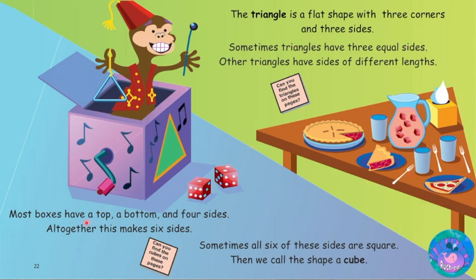Most boxes have a top, a bottom, and four sides — altogether this makes six sides. Sometimes all six of these sides are square. Then we call the shape a cube. Can you find the cubes on these pages?